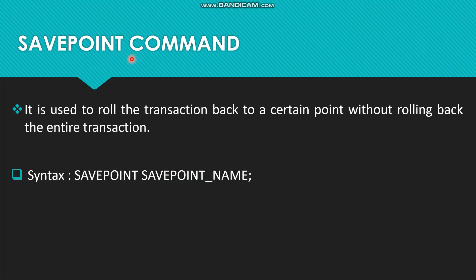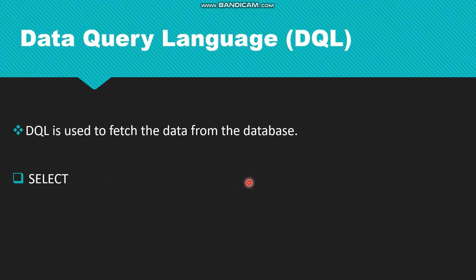Then we have the SAVEPOINT command. It is used to roll the transaction back to a certain point without rolling back the entire transaction. We just need a savepoint to save progress up to that point — it will not roll back to the starting position, but instead roll back to that savepoint. Syntax: SAVEPOINT savepoint_name.